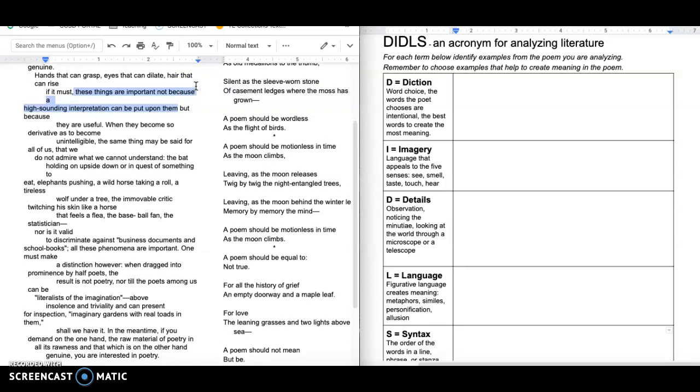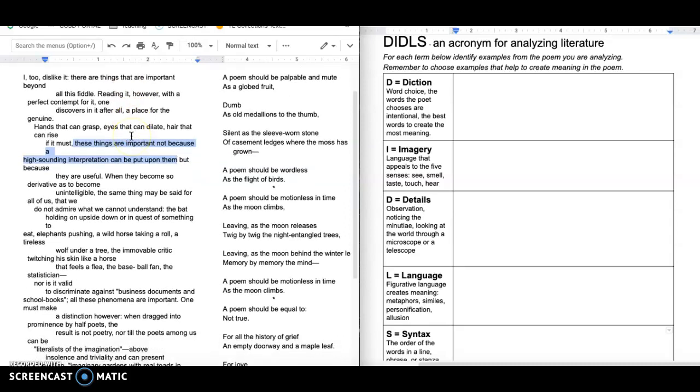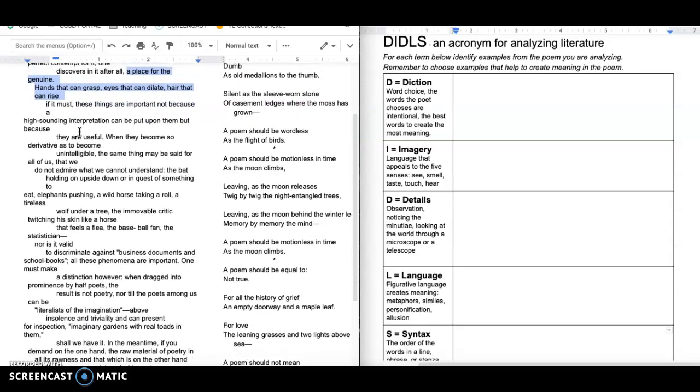I think she does that on purpose because you'll remember a moment ago, she told us she disliked poetry and that when you read it, you can sort of discover this real hatred towards it. But that there is some place for the genuine. And so I think these common ideas right here, I think these are the place for the genuine. She says we don't dislike it when it's real, when it's something we really understand, when it's something we can see or feel or touch. And then she goes on to say it's important not because there's a high sounding interpretation, but because they are useful.